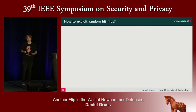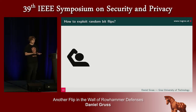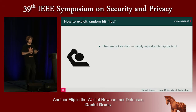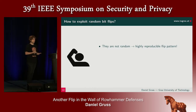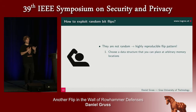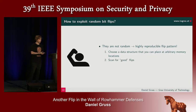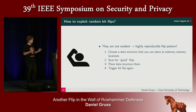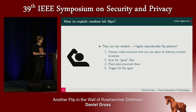So the next question is: how do we exploit random bit flips? And as we heard in the previous talk, they are not actually random — they are highly reproducible. Once you have a bit flip from some memory hammering pattern, you can reproduce it. The strategy is always the same: you choose a data structure that you can place at an arbitrary memory location, scan for good bit flips, place the data structure there, trigger the bit flip again, and then you have your bit flip in the right location.